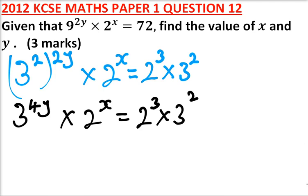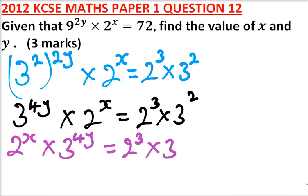From there, we can rewrite it like this. So we can start with 2 to the power x multiplied by 3 to the power 4y is equal to 2 to the power 3 multiplied by 3 to the power 2.